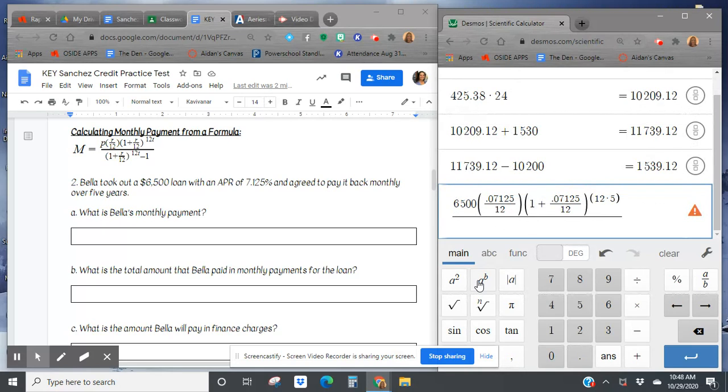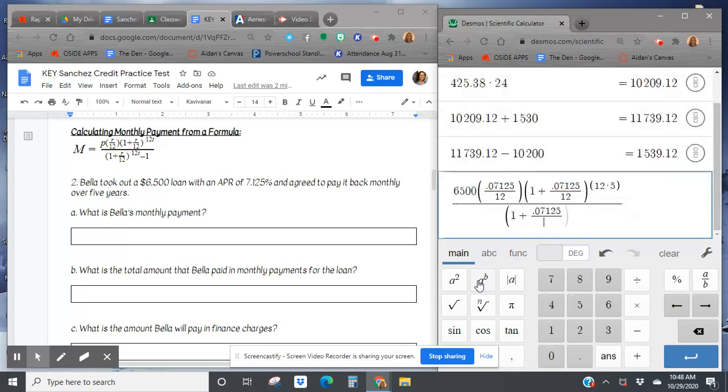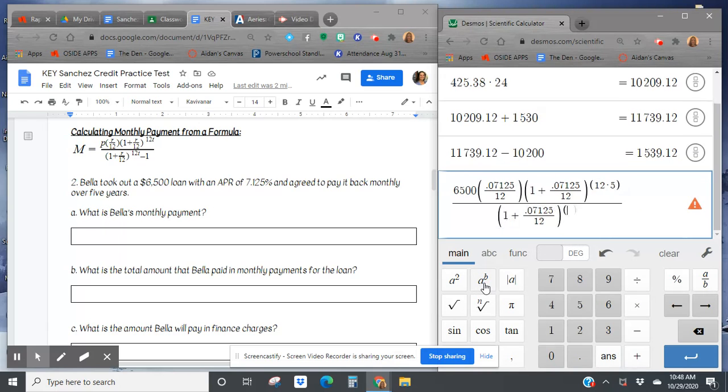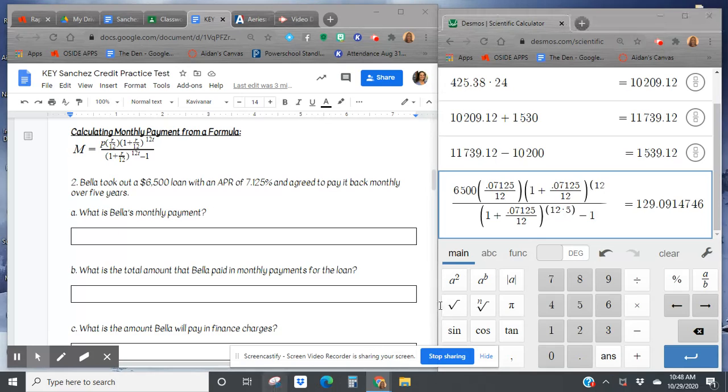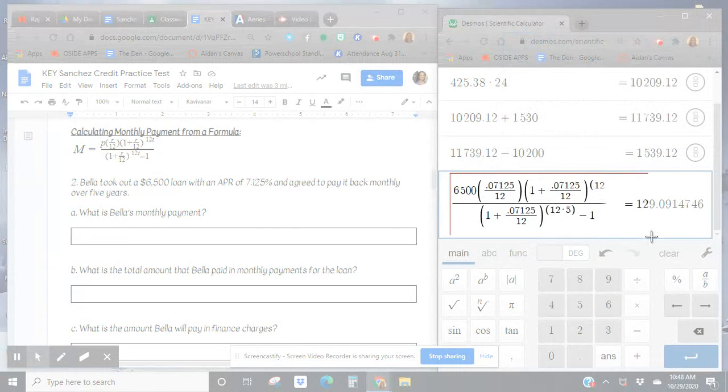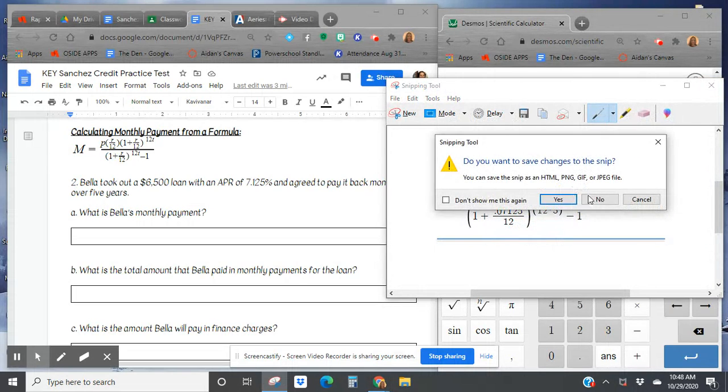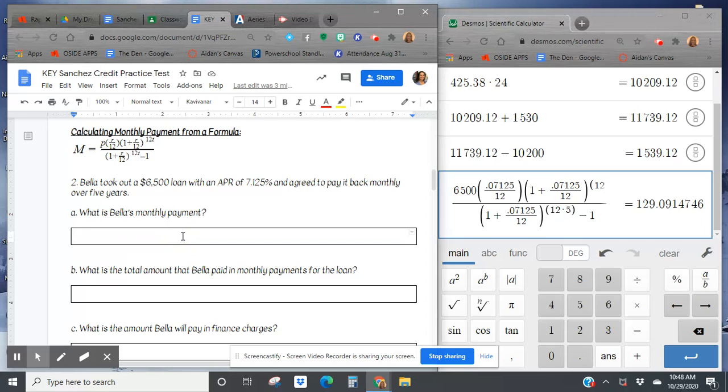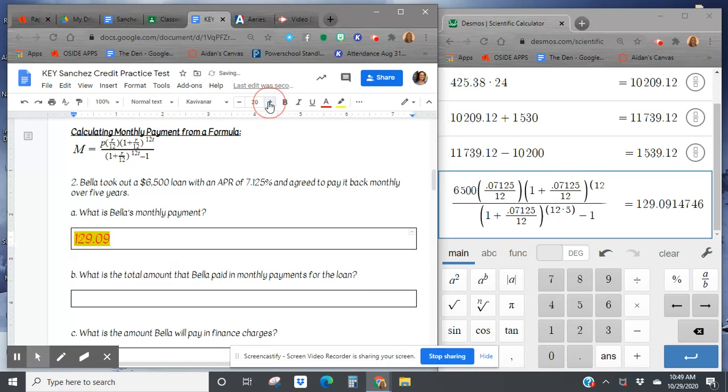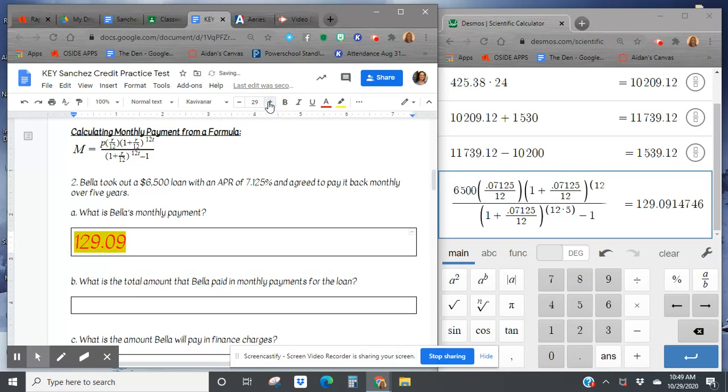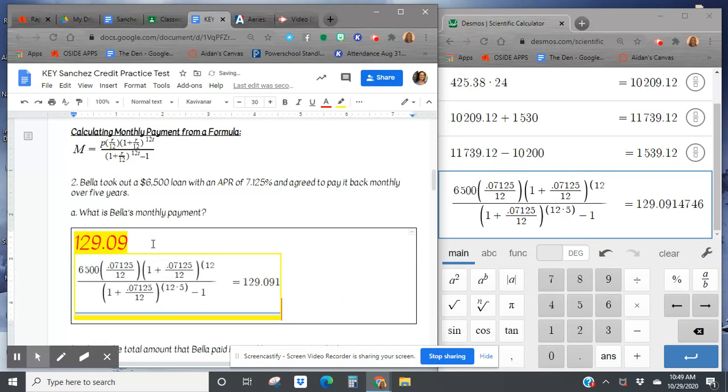All of that goes over 1 plus the rate, divided by 12, to the power of 12 times 5, minus 1. So monthly payment is $129.09. And here's your Desmos work.